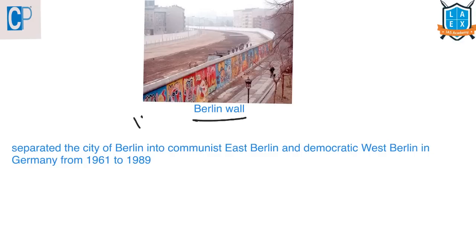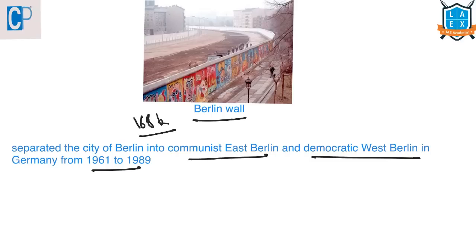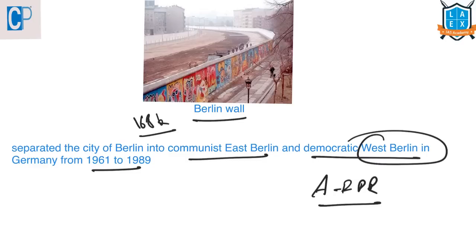The Berlin Wall, which is around 168 km long, separated the city of Berlin into Communist East Berlin and Democratic West Berlin in Germany from 1961 to 1989. It was constructed by the German Democratic Republic or East Germany in 1961 to prevent people from escaping the eastern half of Berlin. This Berlin Wall was officially referred to as the Anti-Fascist Protection Rampart by the German Democratic Republic. The West Berlin government used to refer to it as the Wall of Shame, condemning it for restricting freedom of movement.